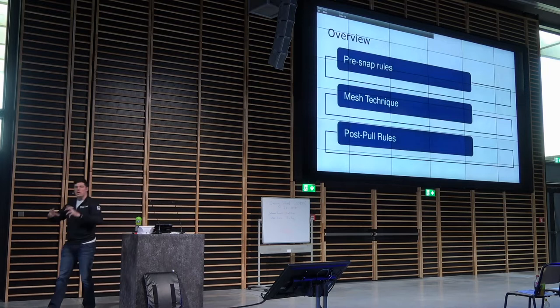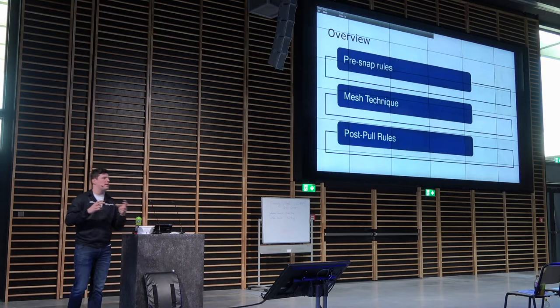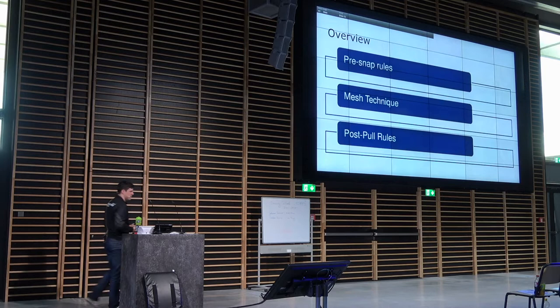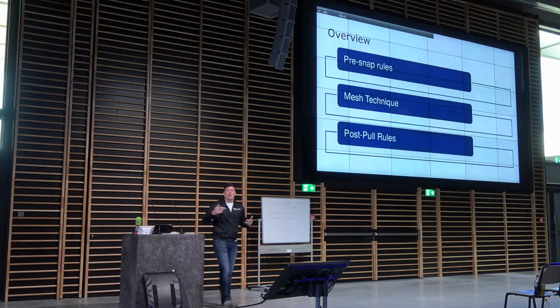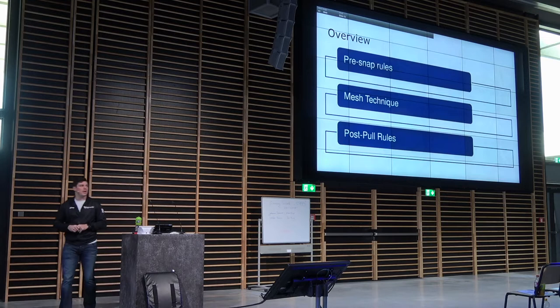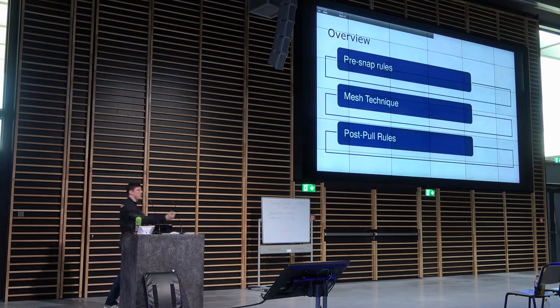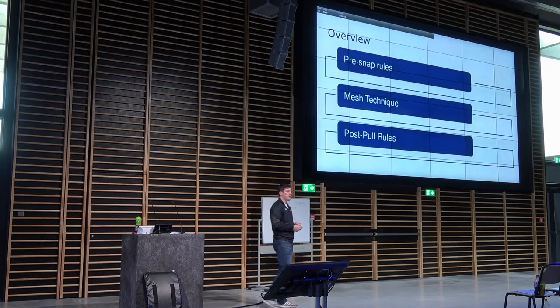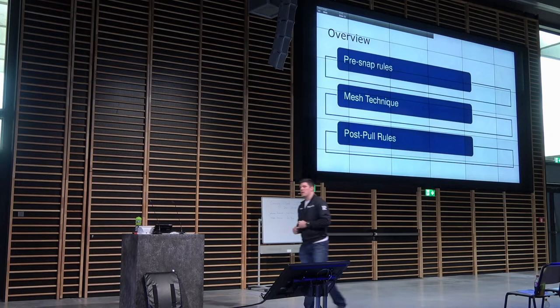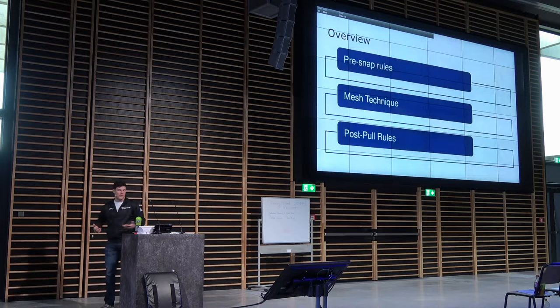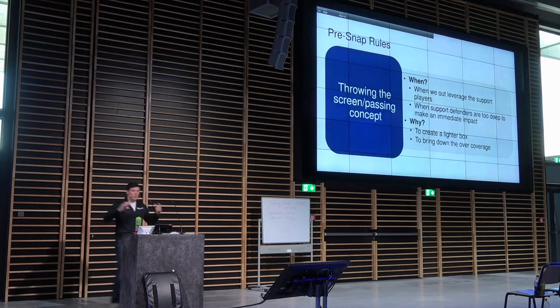It really comes down to three different things. What are we looking at pre-snap? How can we take advantage of the alignment of the defense, the depth of the safeties, the number of people in the box? Then we're going to talk about the mesh technique — how we teach it at the Raiders, when to give, when to pull, not only when you're reading a C-gap defender but also when you're reading linebackers on RPOs. And then once you pull it, what do you do with it? Because some people make great reads, pull the ball, and then they go nowhere.